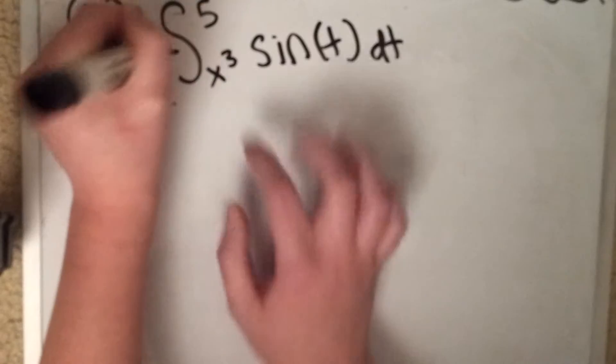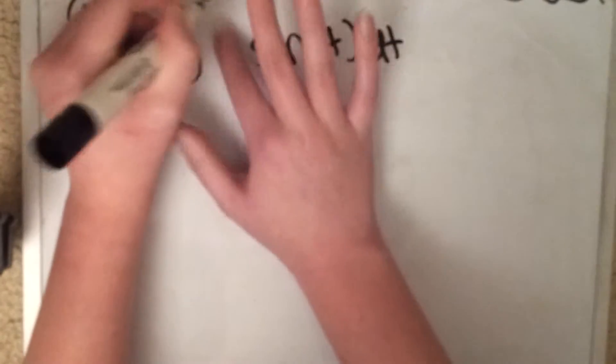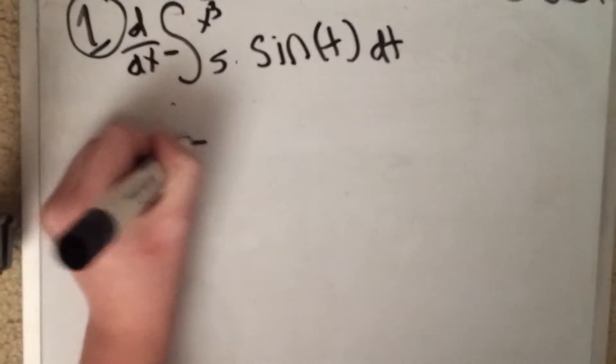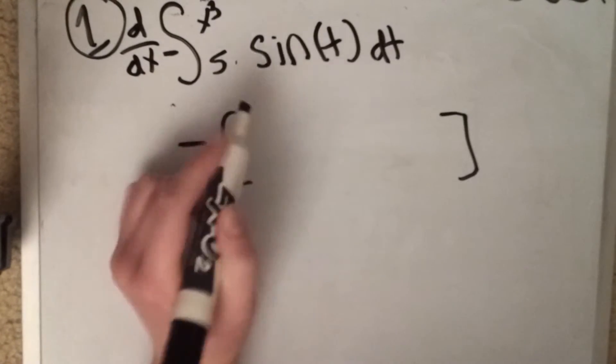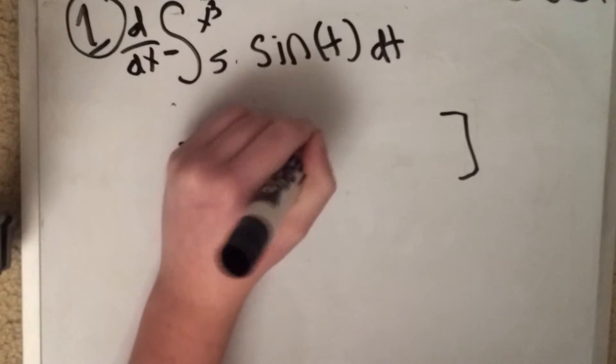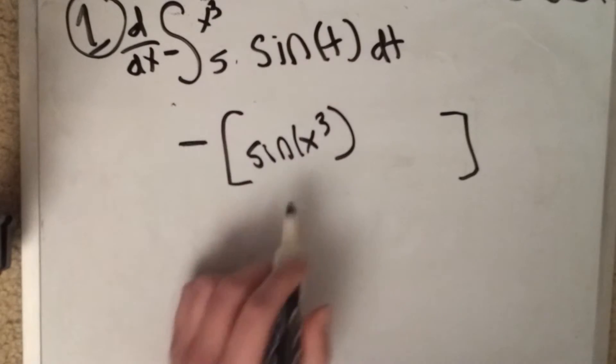So remember we switched this now, so it's negative, and the x cube is up here in the 5. So remember your negative and plug it into the original. Sine of x cubed. See?